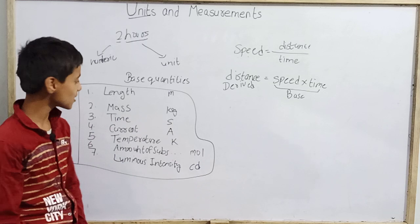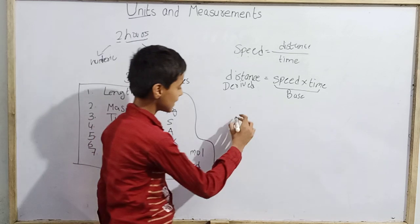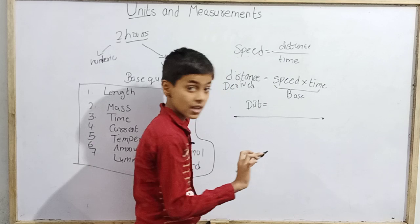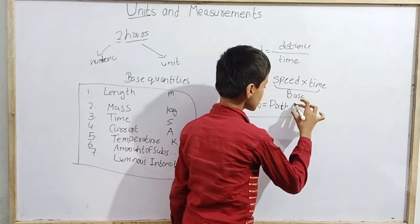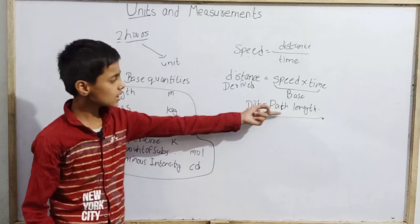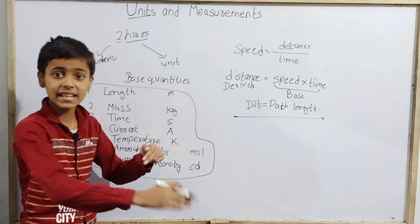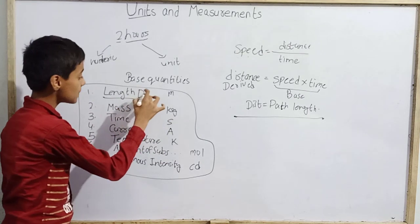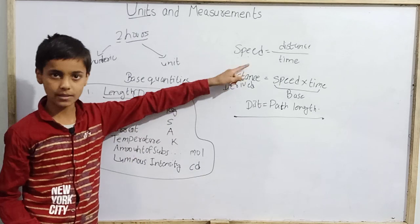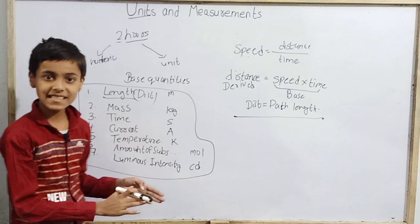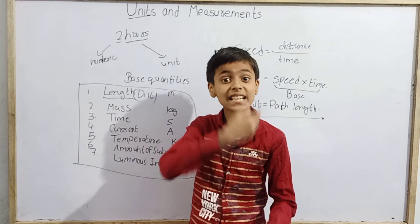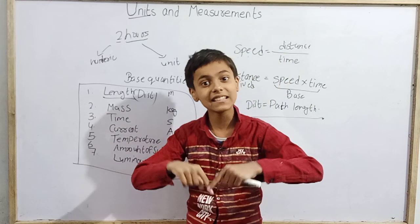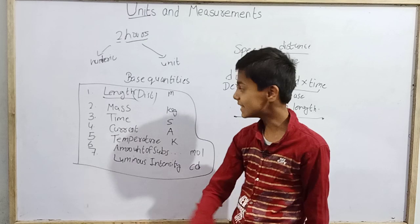However, distance is itself actually a fundamental quantity, because distance is essentially path length — and length is one of our 7 base quantities. So distance, displacement, radius, diameter — all of these are fundamentally a form of length and therefore fall into the fundamental or base quantity category.